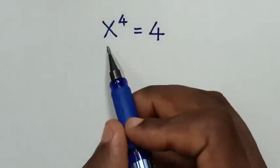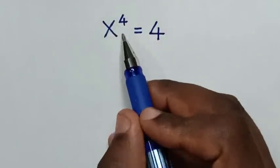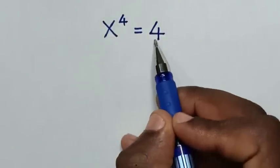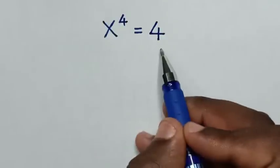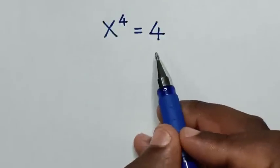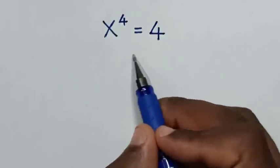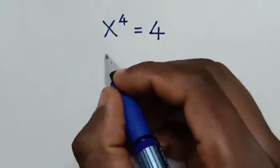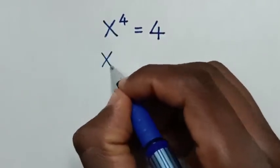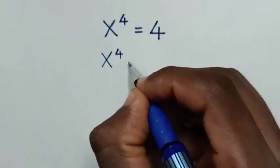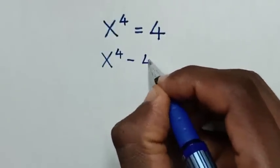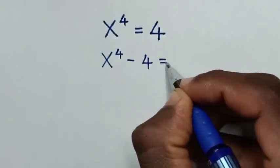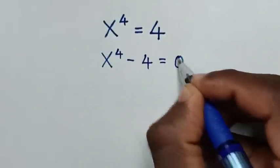Hello. How to solve x power 4 is equal to 4, to find the value of x. So first we take this 4 to the right side, so it will be x power 4 minus 4 is equal to 0.